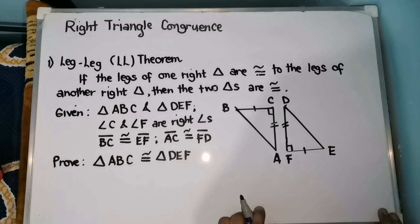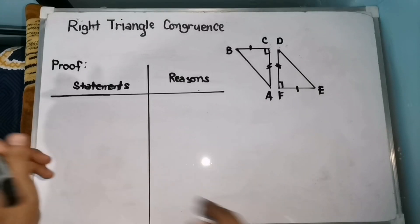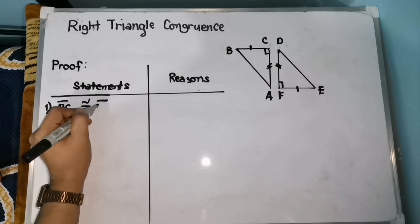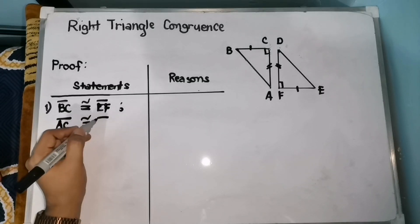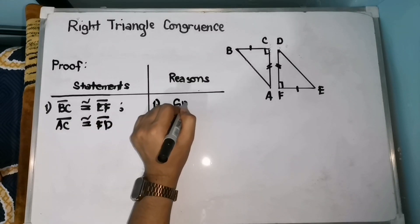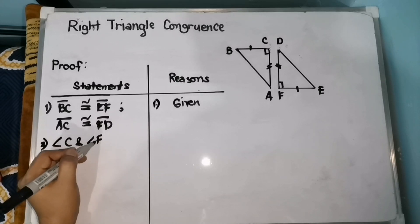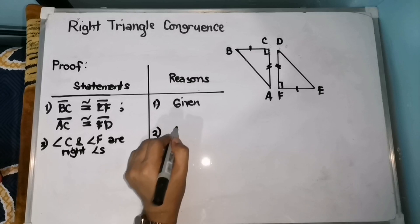We are going to use a two-column proof, placing statements and reasons to prove whether these two triangles are congruent by applying the LL theorem. Our first statement is: segment BC is congruent with segment EF, and segment AC is congruent with segment FD — reason: given. The second statement is: angle C and angle F are right angles — reason: given.